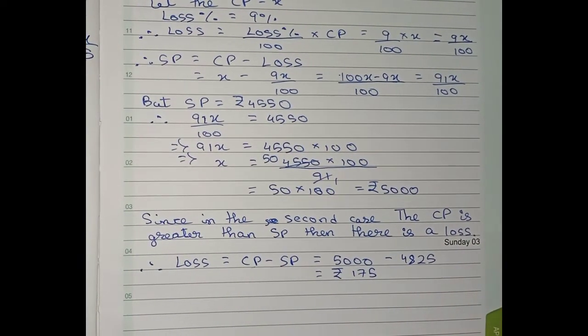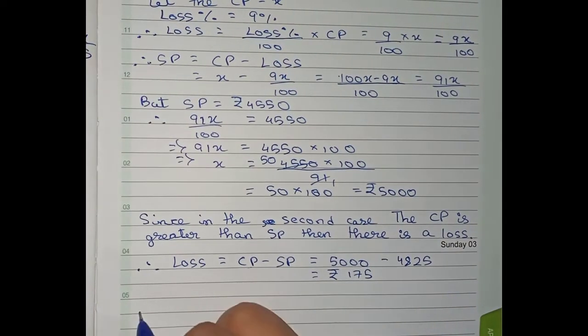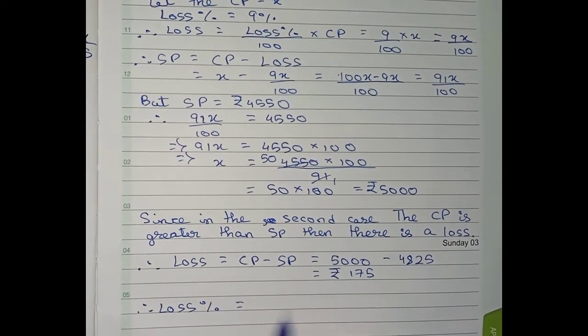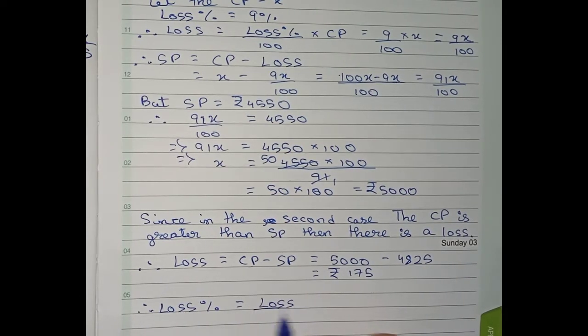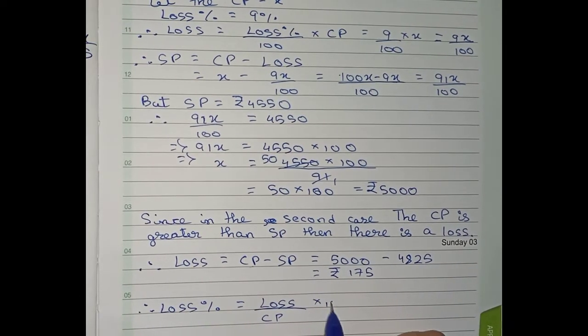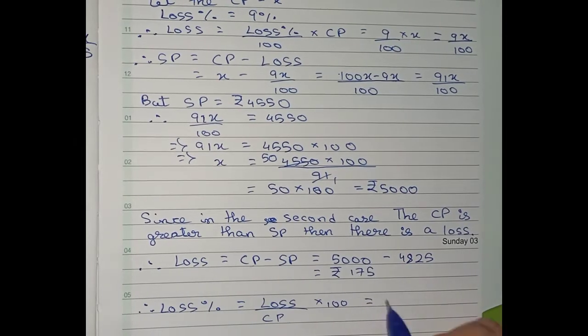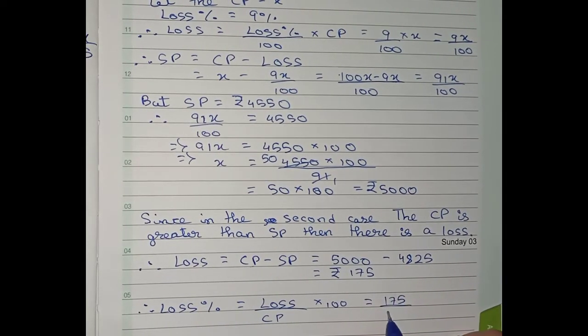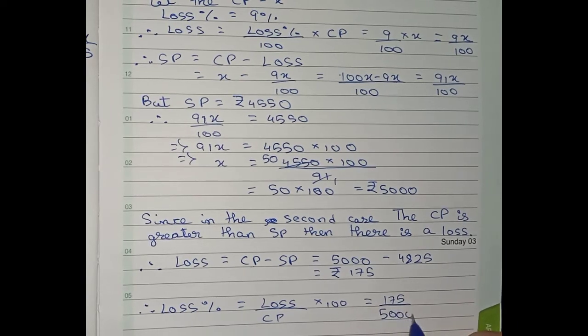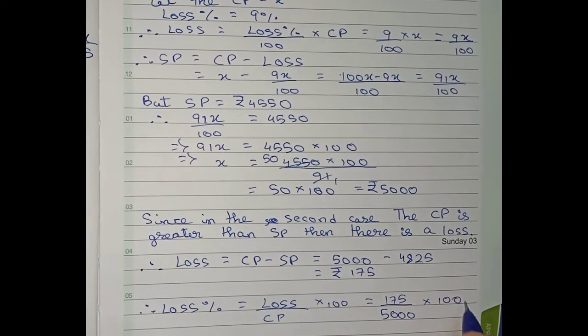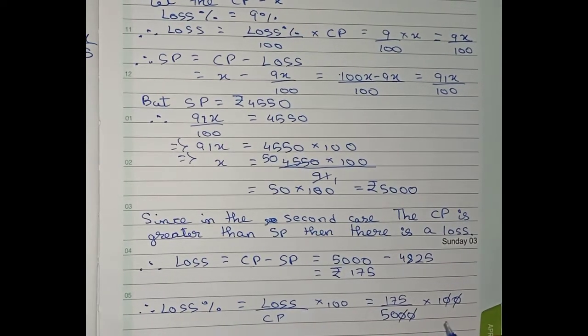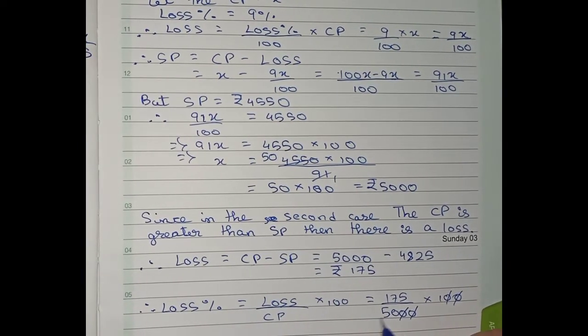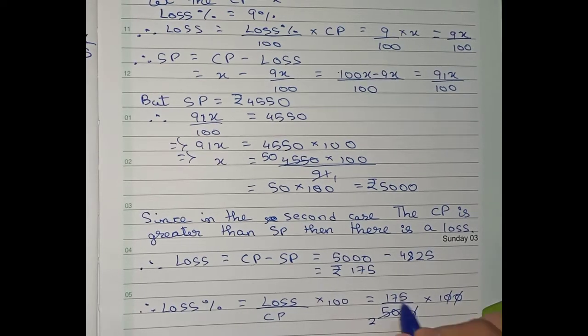So I have taken out our loss amount. Now I will find the loss percentage. Therefore loss percentage formula is loss by CP into 100. So equals to our loss is 175 by CP that is 5000 into 100. First we cut the 0. Now I cut 175 and 50 by 25.